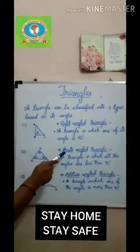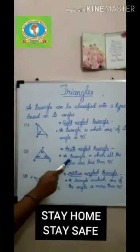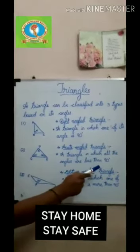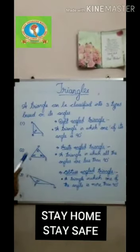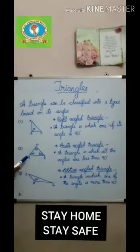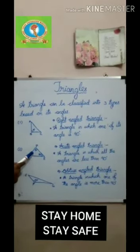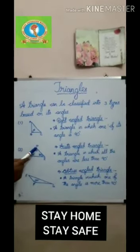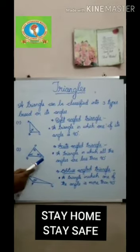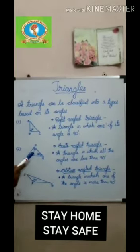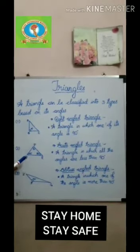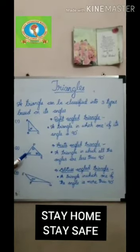Second, the acute angle triangle. A triangle in which all the angles are less than 90 degrees is called an acute angle triangle. Here in triangle PQR, angle P is equal to 60 degrees, angle Q is equal to 40 degrees, and angle R is equal to 80 degrees — all less than 90 degrees. So it is called an acute angle triangle.